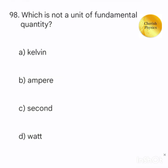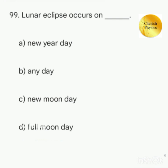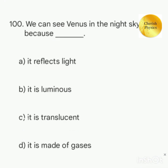Which one of the following is not a fundamental quantity? Lunar eclipse occurs on. We can see venus in the night sky because. Thank you.